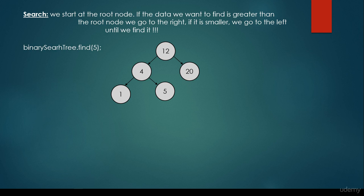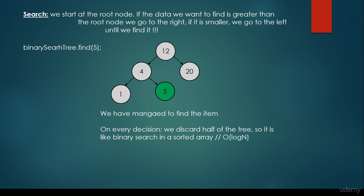What if we would like to find the 5? We start at the root node again, which is 12. We come to the conclusion that 5 is smaller than 12, so we go to the left. We come to the conclusion that 5 is greater than 4, so we have to go to the right. And basically this is the item we are looking for. On every decision, we discard half of the tree.